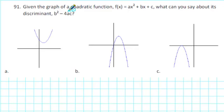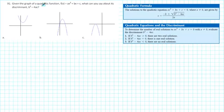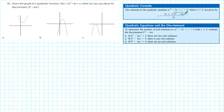Let's recall where we've seen the discriminant b² - 4ac before. We've seen it in the quadratic formula. The quadratic formula says the solutions to ax² + bx + c = 0 are given by x equals the opposite of b, plus or minus the square root of b² - 4ac, all divided by 2a.